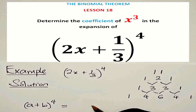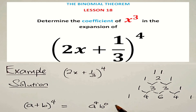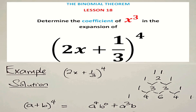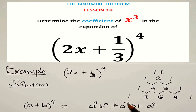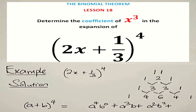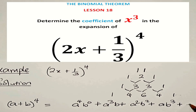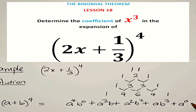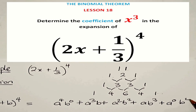We say a to the power of 4 multiplied by b to the power of 0. Then we subtract 1 on a's power to get a to the power of 3, and add 1 on b's power to get b to the power of 1. Then a squared times b squared. Then a to the power of 1 times b to the power of 3. Then a to the power of 0 times b to the power of 4.